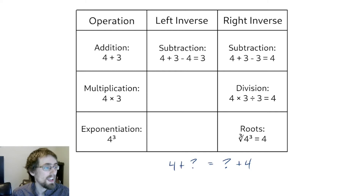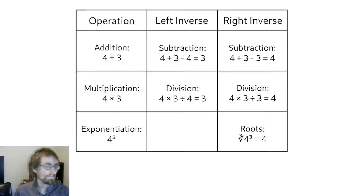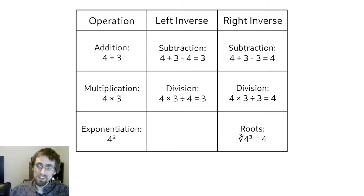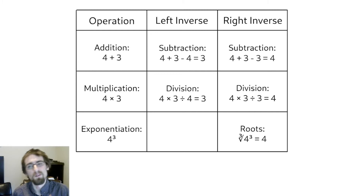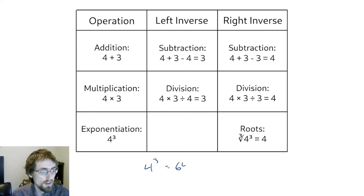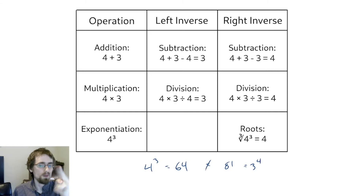Similarly, multiplication is also commutative — a times b equals b times a — so the left inverse for multiplication also happens to be its right inverse. For both addition and multiplication there's no difference between left and right inverses, which explains why we don't usually make that distinction. But if we look at exponentiation, we can immediately see it's not commutative: four to the three is 64, but three to the four is 81 — swapping the numbers gives different results.